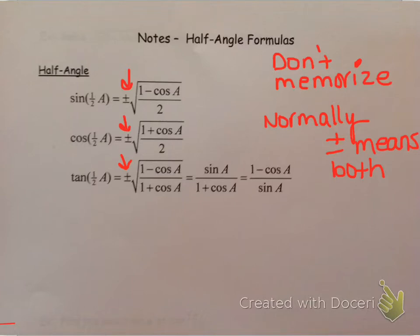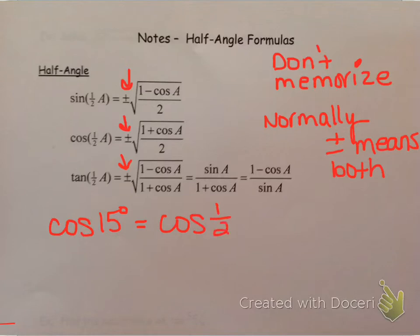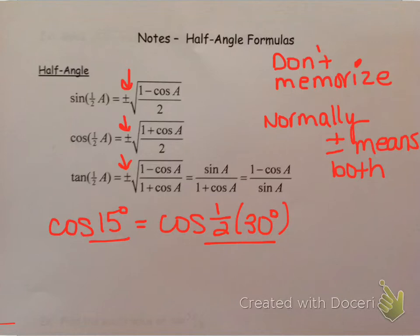So let's say that I was looking for cosine of 15 degrees. First of all, that would be cosine of half of 30. We've done 15 degrees with a sum or difference identity; we can also use a half-angle identity now. I would always choose sum or difference, but that's just a personal choice. The more important thing is that 15 degrees is in quadrant one, and so if I was trying to evaluate cosine of a half angle and that half angle was in quadrant one, I would choose the positive square root.